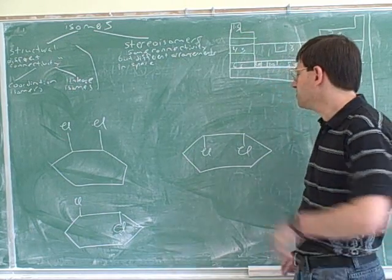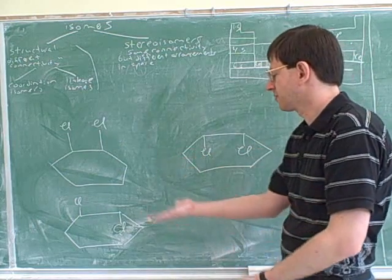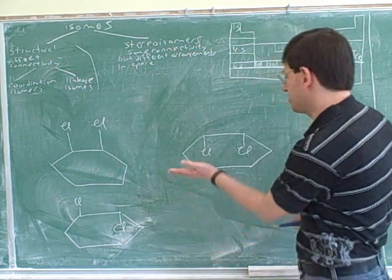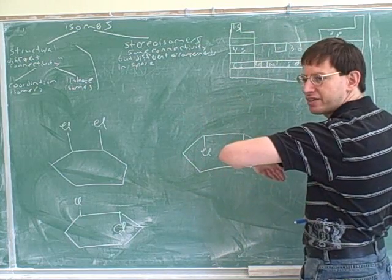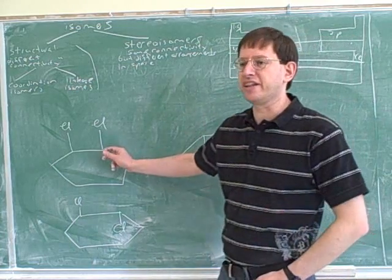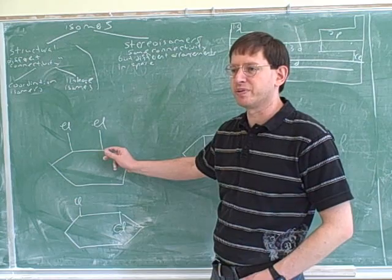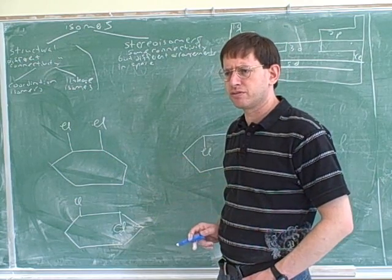They're the same because if you just rotated this the two chlorides would be pointing up, right? If we simply took this molecule and rotated it like this, wouldn't it look exactly like this? Then the two chlorides would point up. Does that make any sense or not?